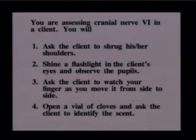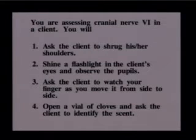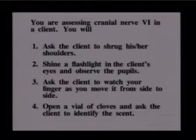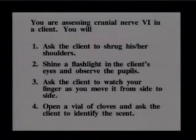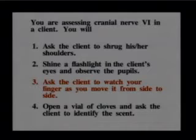Let's do another question. You are assessing cranial nerve six in a client. The choices are: ask the client to shrug shoulders; shine a flashlight in the eyes and observe pupils; ask the client to watch your finger as you move it from side to side; or open a vial of cloves and ask the client to identify the scent. The correct answer is number three — ask the client to watch your finger move side to side — because cranial nerve six is the abducens nerve. I often think of abducens as abduction, moving side to side.